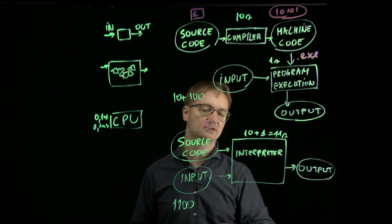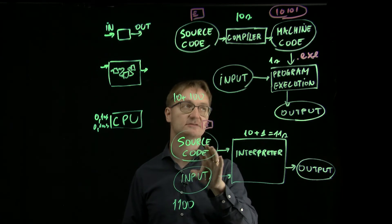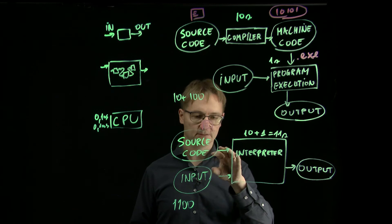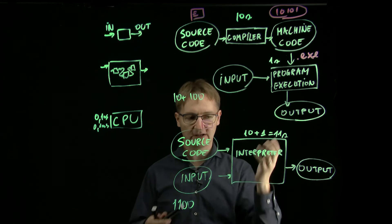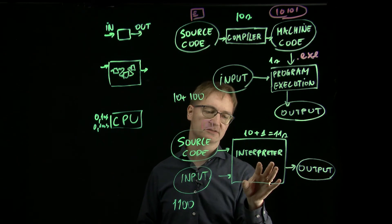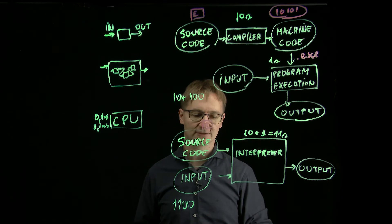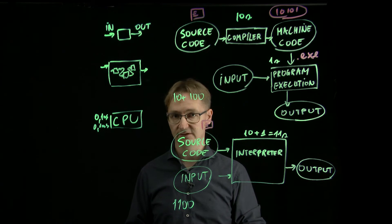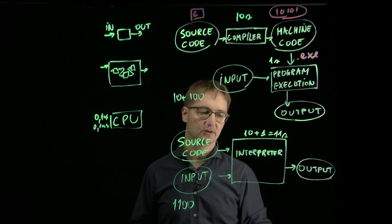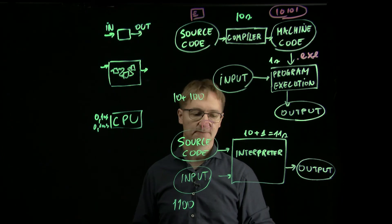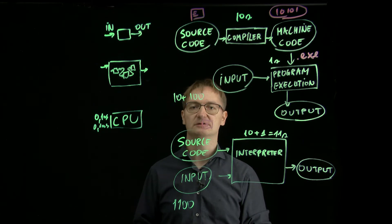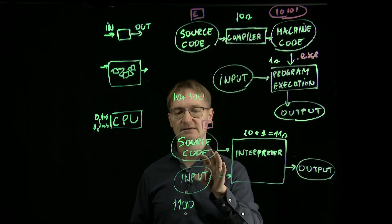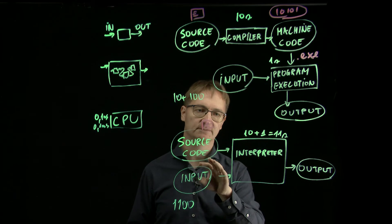With Python it's easier — you don't have a compiled executable file anyway, only the source code. If you send it to a friend, they just need the Python interpreter installed to run your code. Usually the interpreter requires fewer resources than a compiler, and Python is available on many different devices and operating systems, including Raspberry Pi. So Python is often considered a more portable language than C or Java.